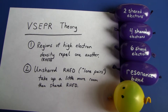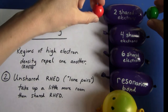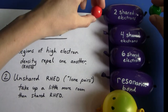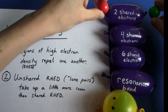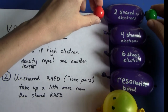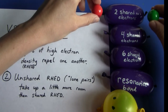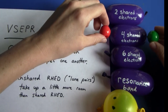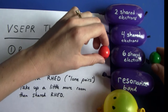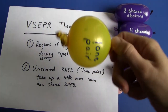We have shared regions of high electron density and unshared electron density. The shared regions of electron density are represented by the purple balloons, and we can imagine these spheres as atoms — the nuclei of the atom. If you have two shared electrons between two nuclei, then we have one region of shared electron density, or RHED — region of high electron density.